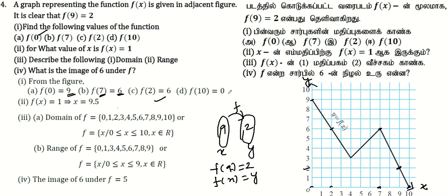Now for the second subdivision: for what value of x is f of x equal to 1? f of x equal to 1 means we look for the x-value where y equals 1. From the graph, when f of x equals 1, x is equal to 9.5.